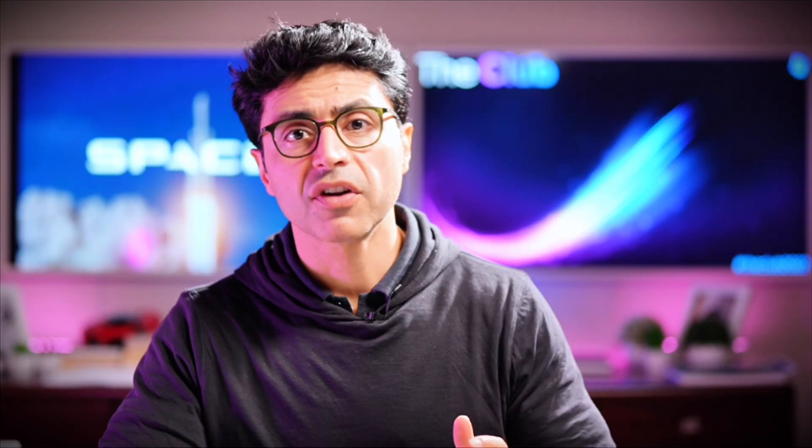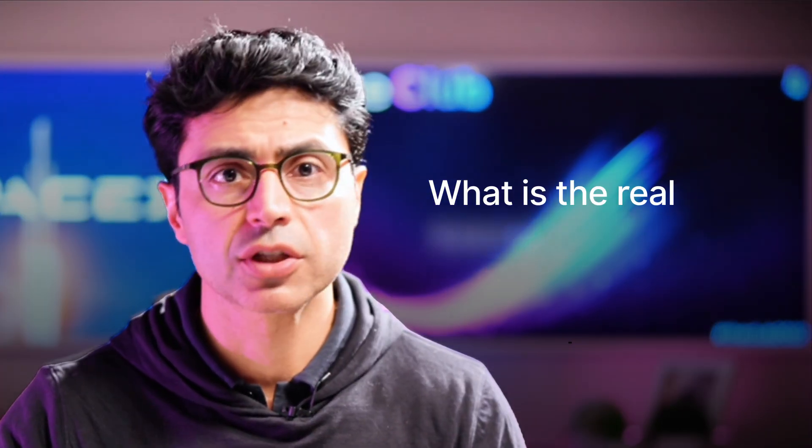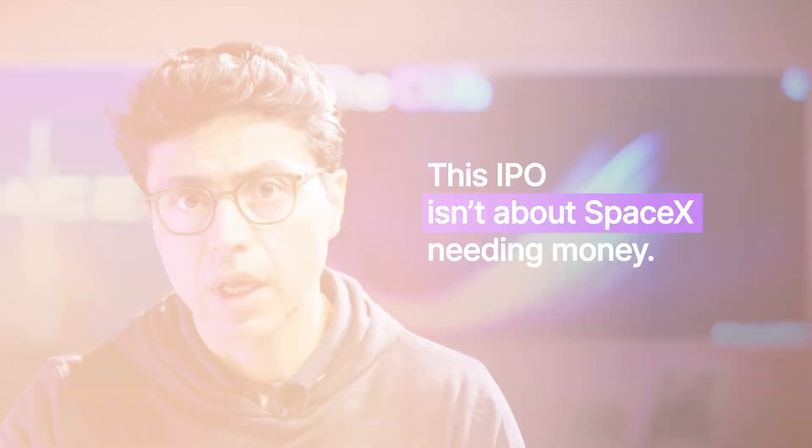Now let me show you a few other facts why this all makes sense. The 700 billion gap makes sense. It's the difference between private ownership and publicly tradable infrastructure. So what is the real reason of this IPO? Why did IPO happen? This IPO isn't about SpaceX needing money.